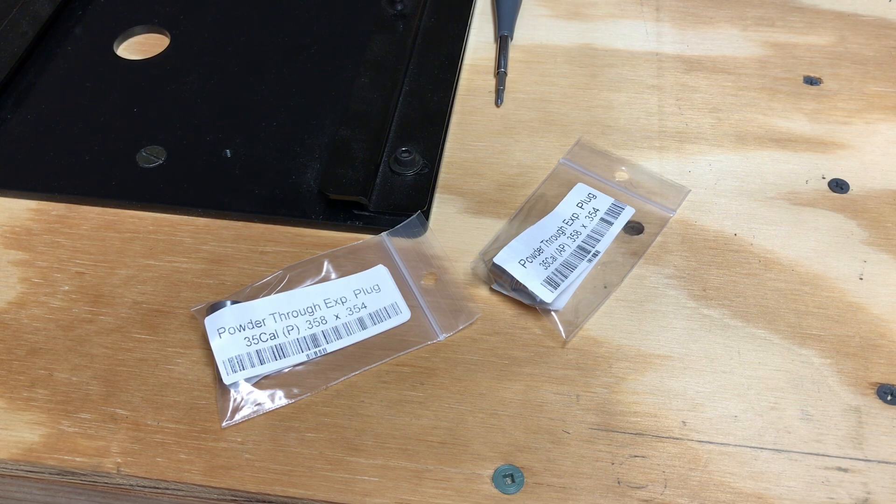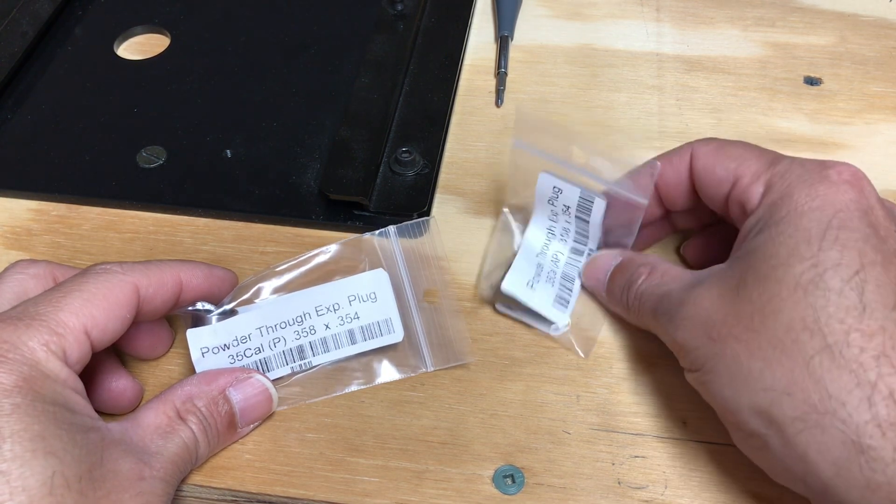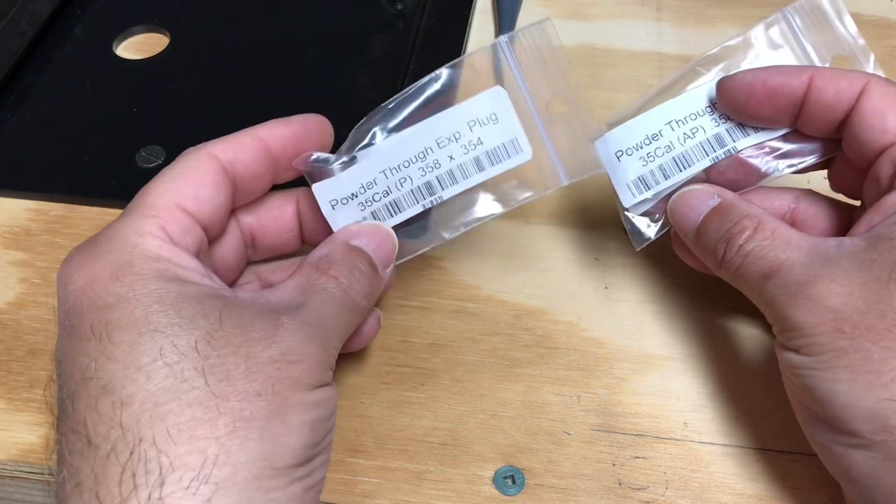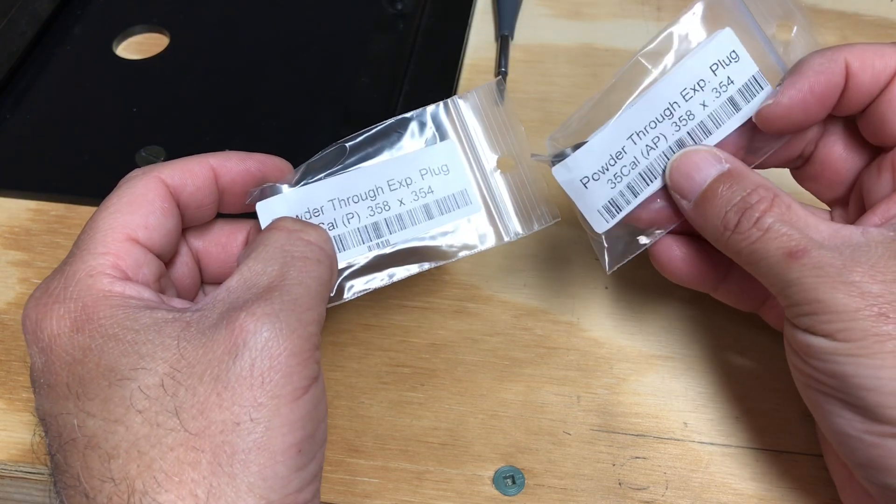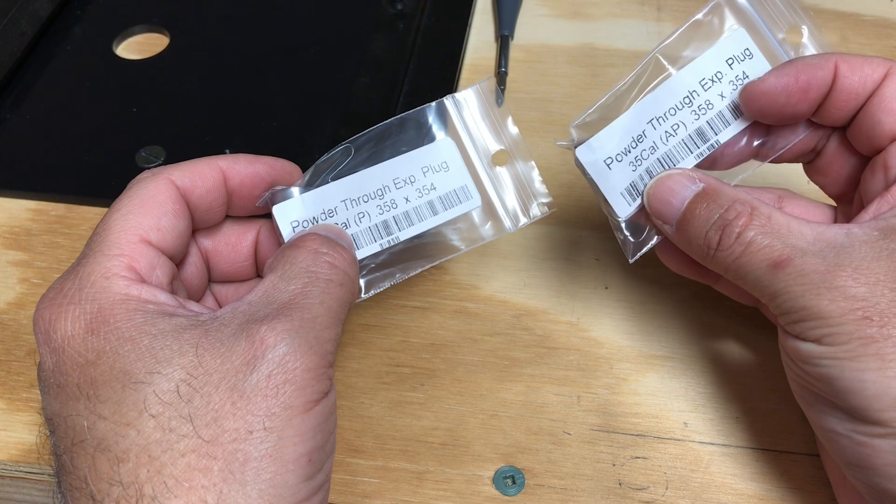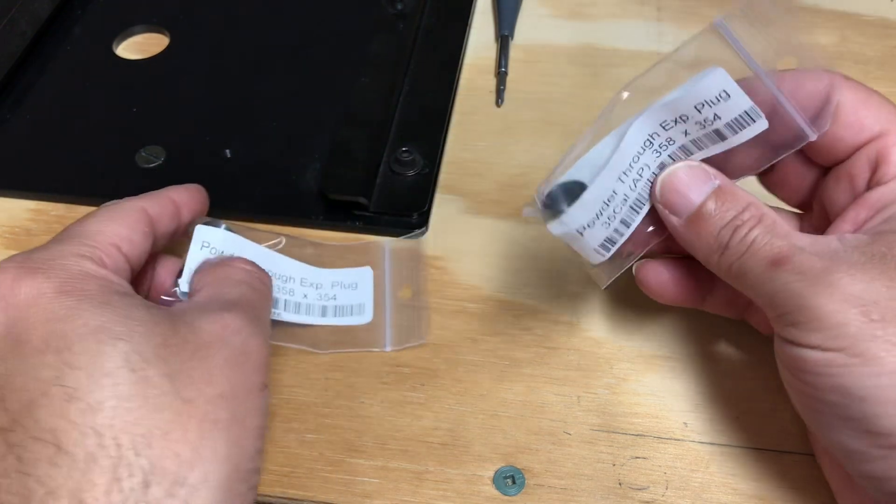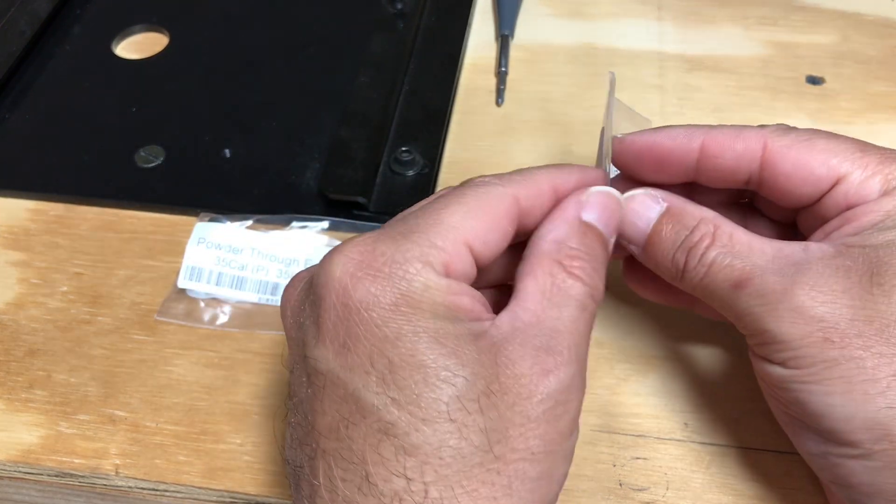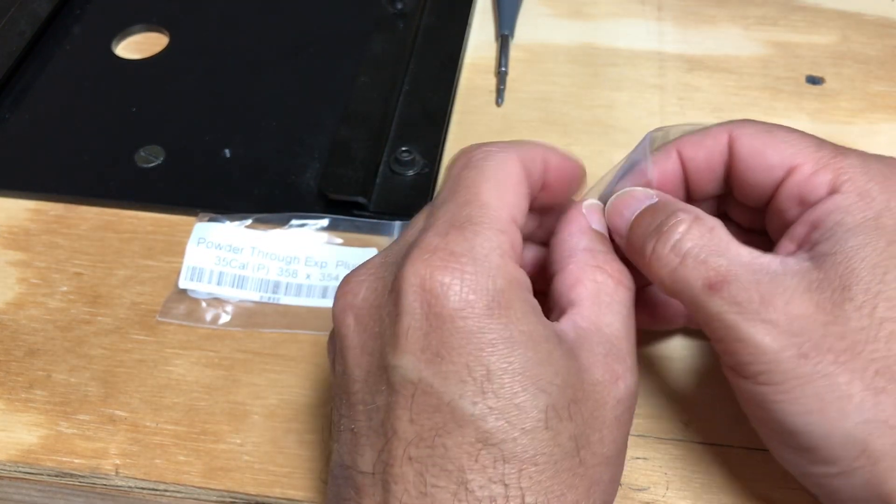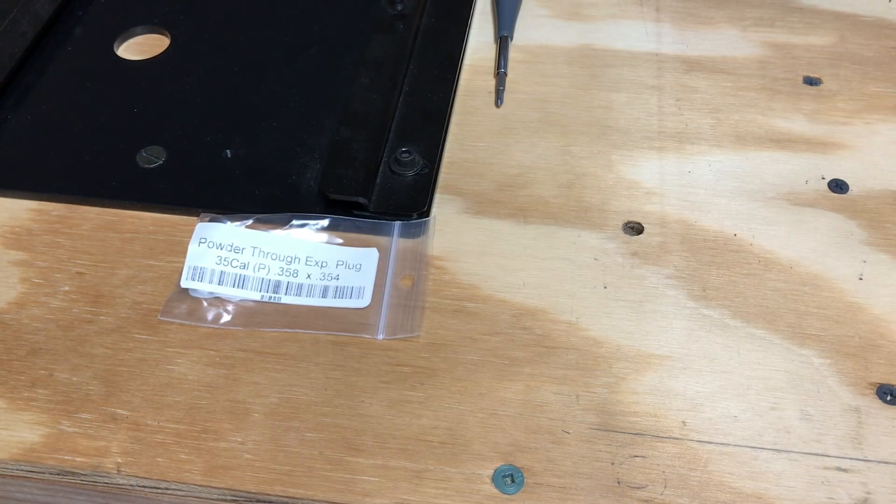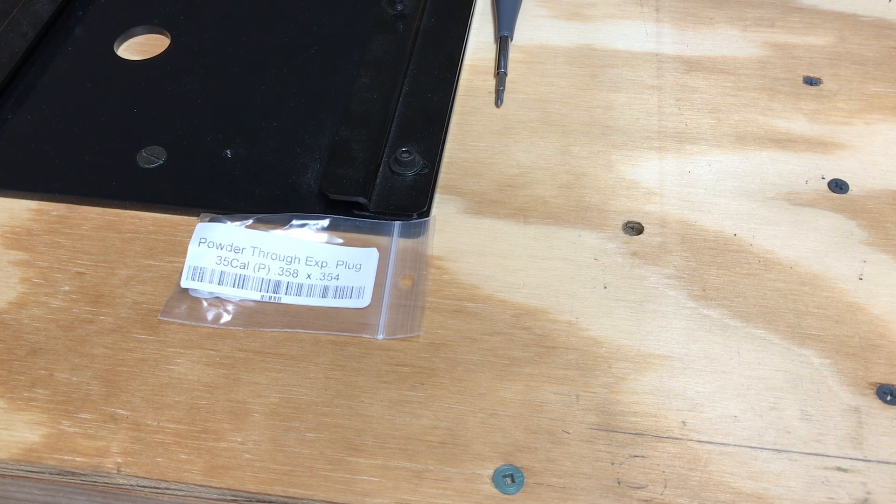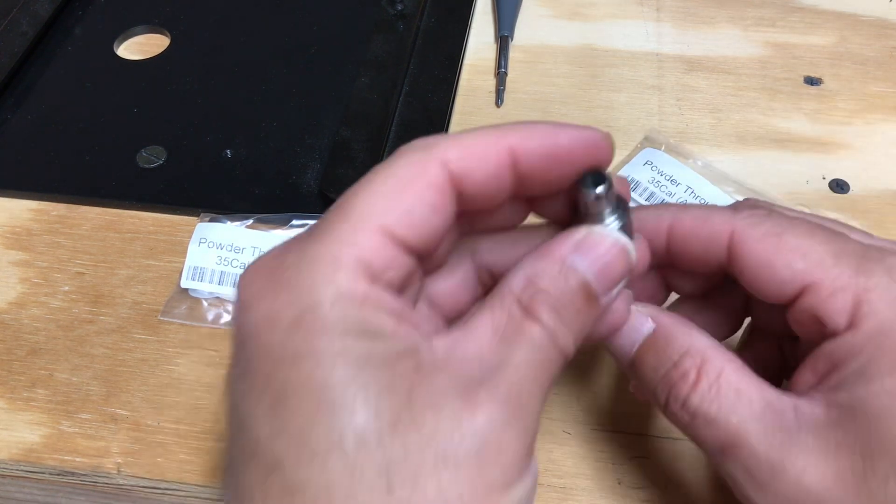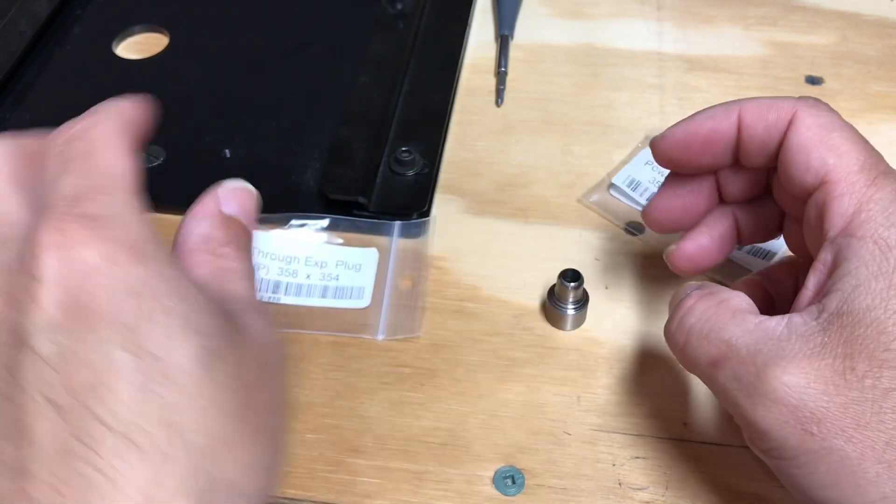Here goes for the 38 to 357 Magnum, and this one here is the same size but this one is for the auto, for just a nine millimeter or a 380. They both got the same problem. I can't get this thing open. Alrighty, oh man, okay, sheesh, trying not to break the little bag.